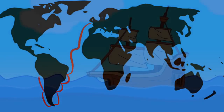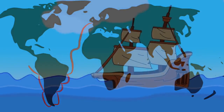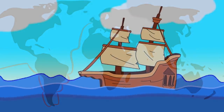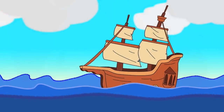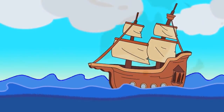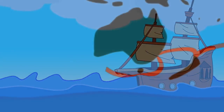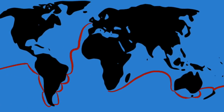In his travels, he observed that creatures found on the islands he visited were similar to ones found on the mainland, but appeared to be slightly different. It wasn't until he returned home that he came to the conclusion that species are specially modified to their environments, and that's why they differ.